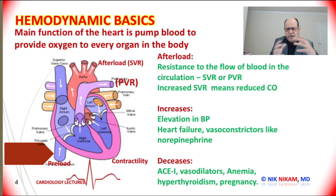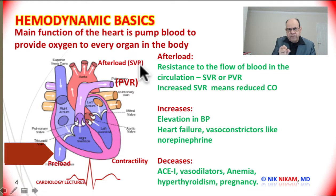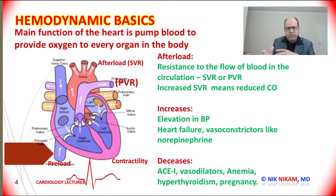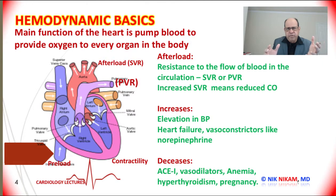Conditions where we see increased peripheral resistance include elevated blood pressure, heart failure, and certain drugs which cause vasoconstriction like norepinephrine. Conditions that decrease afterload or systemic vascular resistance improve forward output of the left ventricle because there is less resistance to blood flow. This is a principle we use in treating congestive heart failure patients by giving vasodilators and ACE inhibitors. Similarly, patients with high cardiac output such as anemia, hyperthyroidism, or pregnancy have dilation of blood vessels which decreases systemic vascular resistance.